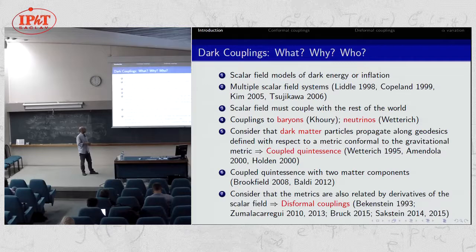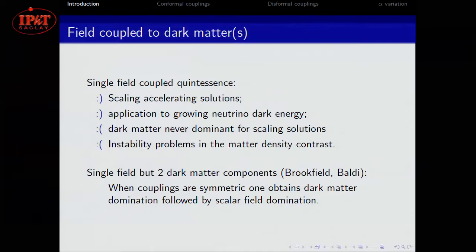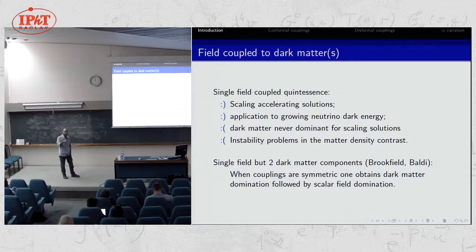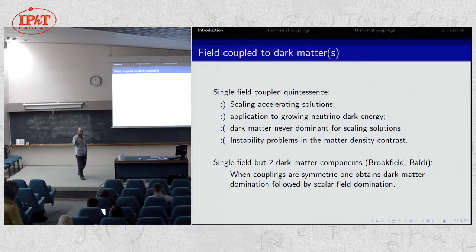We consider couplings with dark matter and build these models of coupled quintessence. What I'm going to discuss, besides the conformal couplings, are the advantages and disadvantages of doing these couplings. We can obtain scalar accelerating solutions, with applications such as growing neutrino dark energy. The downside is that in the case of coupled quintessence, the dark matter never dominates the evolution of the universe — the couplings are very strong — and this brings problems with the CMB and growth of structure.